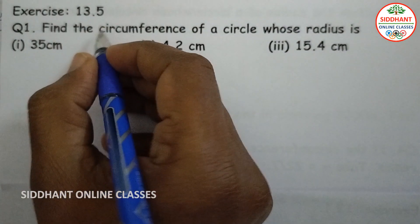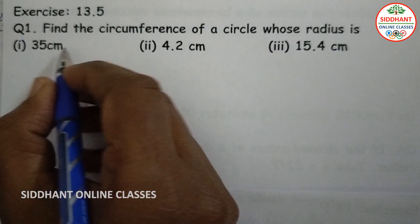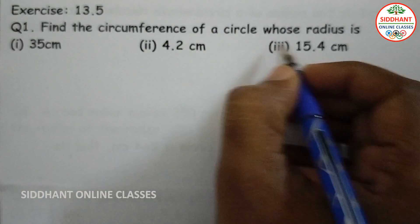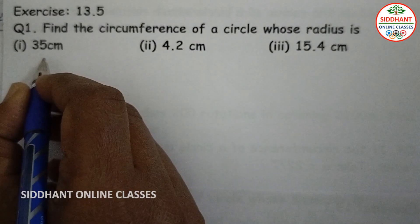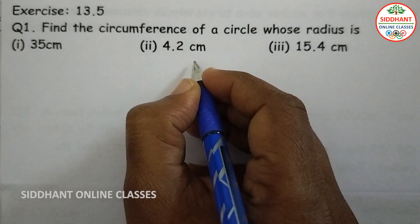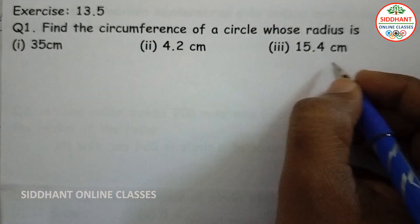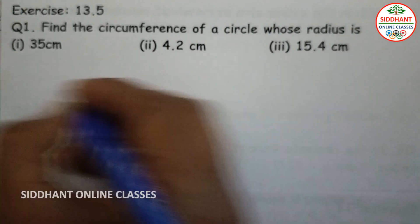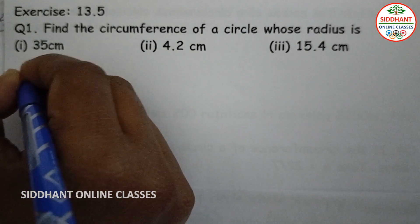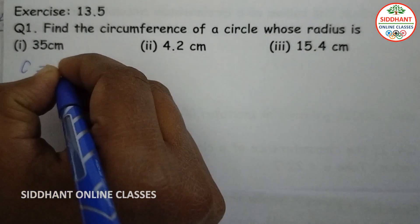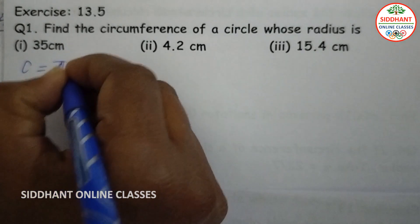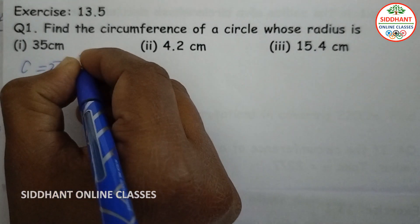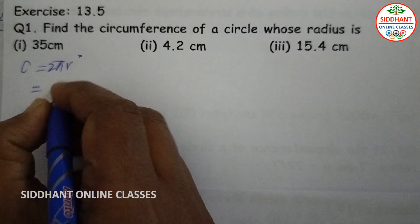Exercise 13.5, question number one: find the circumference of a circle whose radius is 35 centimeter, 4.2 centimeter, and 15.4 centimeter. We know the circumference of a circle is 2 pi r.